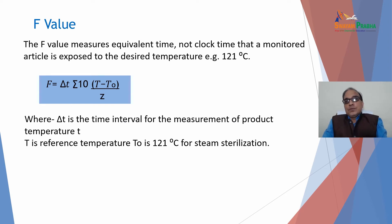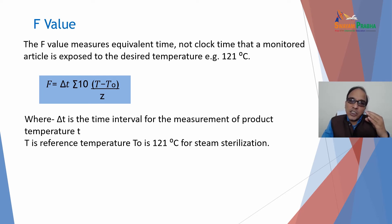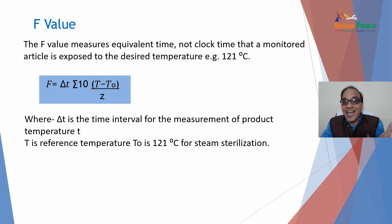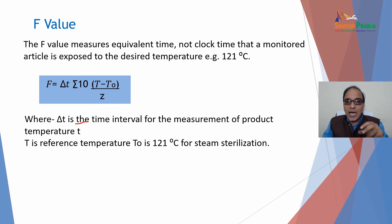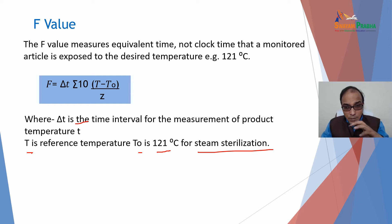F-value: the F-value measures equivalent time — not clock time — that a monitored article is exposed to the desired temperature, for example 121°C. F = ΔT × Σ(10^((T − T₀)/Z)), where ΔT is the time interval for measurement of product temperature, T is the product temperature, T₀ is the reference temperature of 121°C for steam sterilization. By this formula we can calculate the F-value.